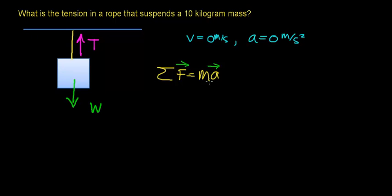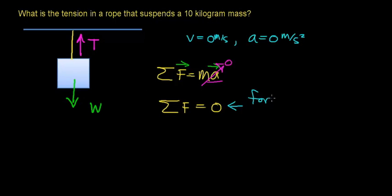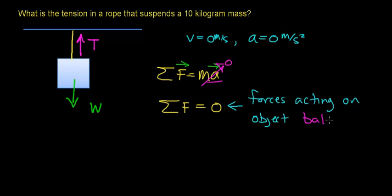Since we assumed the box is at rest, the acceleration of this object is 0, so the entire mass-times-acceleration term works out to be 0. We can rewrite Newton's second law saying that the sum of the forces acting on this object equals 0. Whenever the sum of the forces equals 0, it means that the forces acting on this object balance out — there is no net force, so this object will remain at rest.